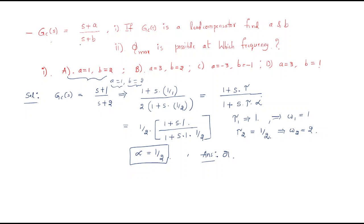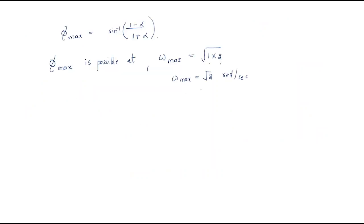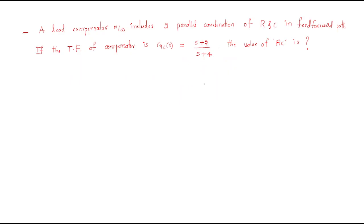Whenever a problem is given like this, substitute the values of a and b and verify it satisfies the lead compensator format from the given options. The maximum phase is always possible at the geometric mean frequency, which is √2 radian per second in this case.